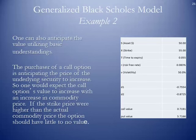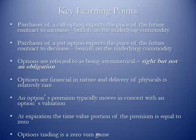One can also anticipate the value utilizing basic understandings. The purchaser of a call option is anticipating the price of the underlying security to increase, so one would expect the call option's value to increase with an increase in commodity prices. If the strike price were higher than the actual commodity price, the option should have little to no value. Key learning points: the purchaser of a call option expects prices to increase — their sentiment is bullish on the underlying commodity. The purchaser of a put option expects prices to decrease — their sentiment is bearish — and they want to establish a floor price. Options are referred to as being asymmetrical: it's a right but not an obligation for the buyer. Options are financial in nature; delivery of physicals is relatively rare.